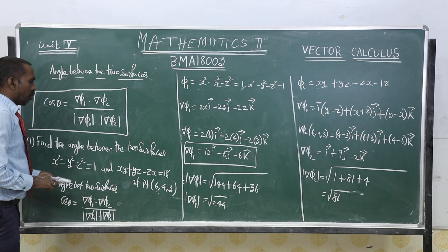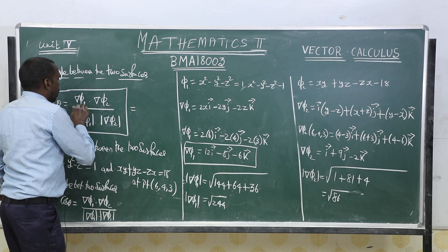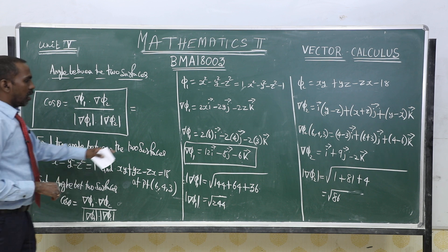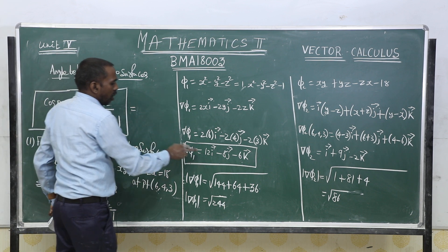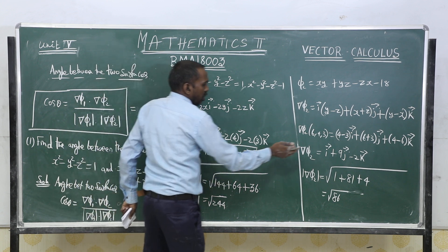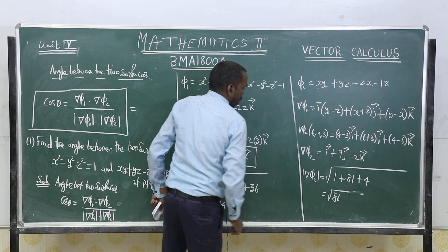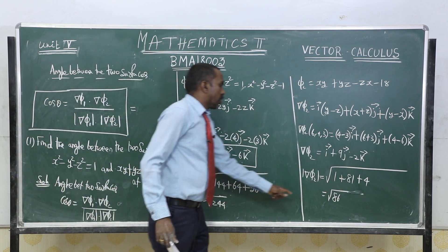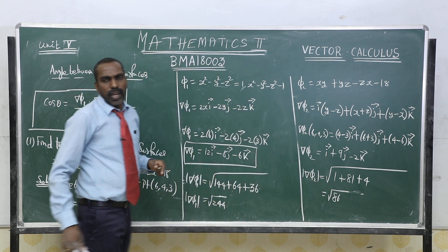Finally, substitute all values into the formula: cos θ = (12i - 8j - 6k) · (i + 9j - 2k) / (√244 · √86). Substituting gives the answer for the angle between the two surfaces.